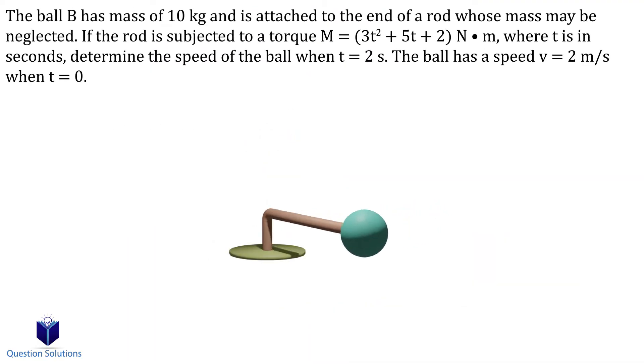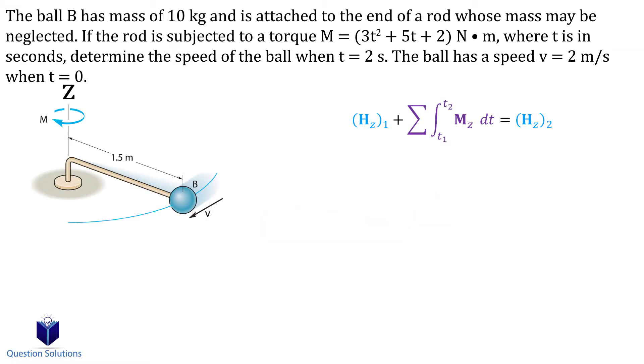In this problem, we need to determine the speed of the ball when time equals 2 seconds. We can head straight into an equation of angular impulse and momentum. Since the moment is applied about the z axis, we can write our equation for the z axis as well. Another way of thinking is that the ball is spinning around the z axis.